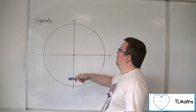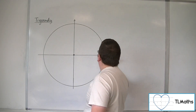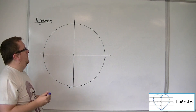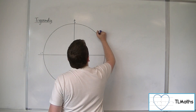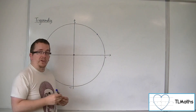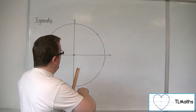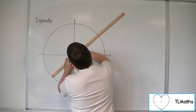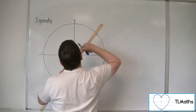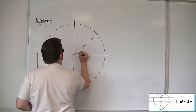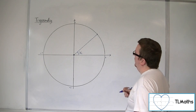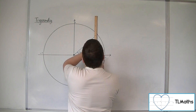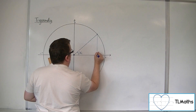Here I've drawn the unit circle — a circle of radius 1. I'm going to choose a point on the circle, that point there for example. And when I draw a radius to this circle, that makes an angle x with the horizontal.